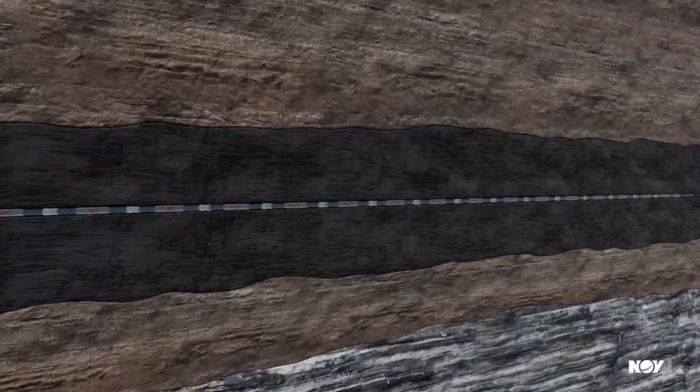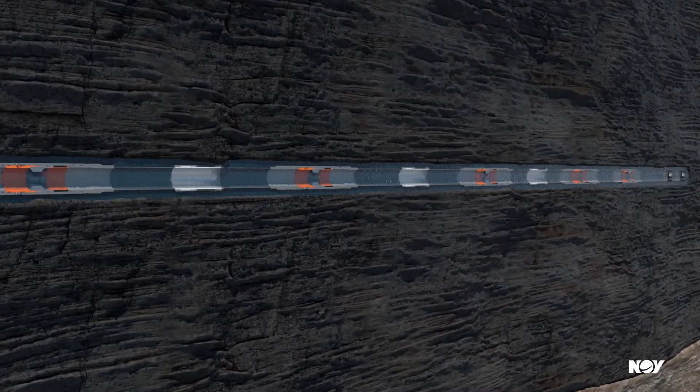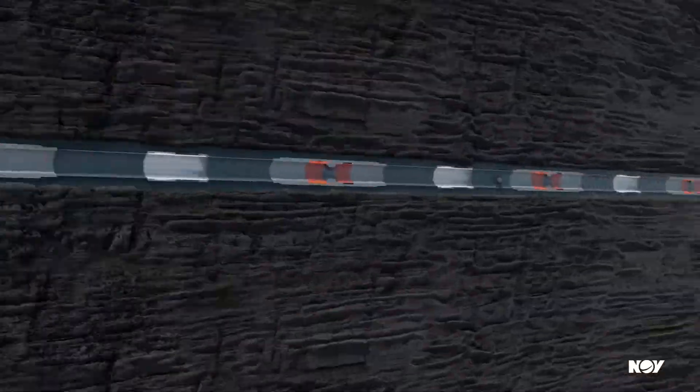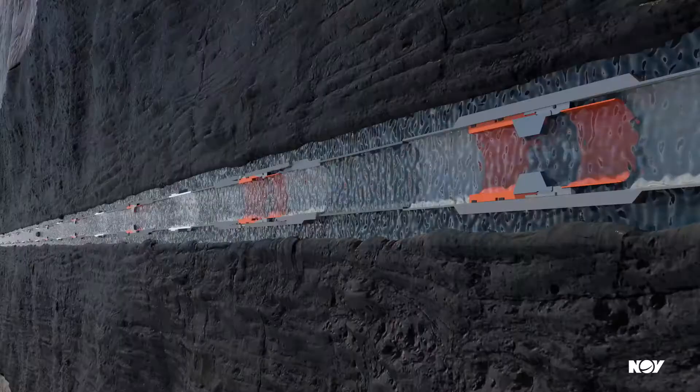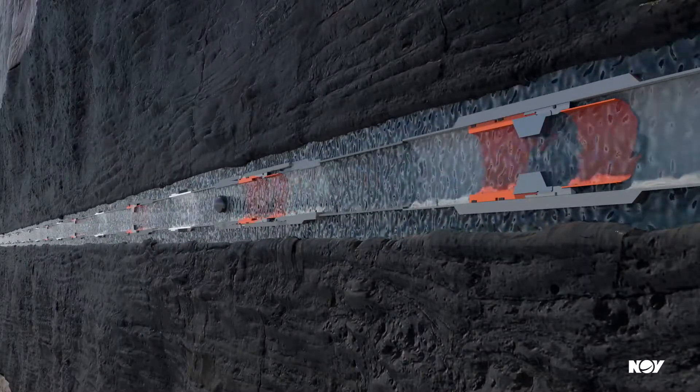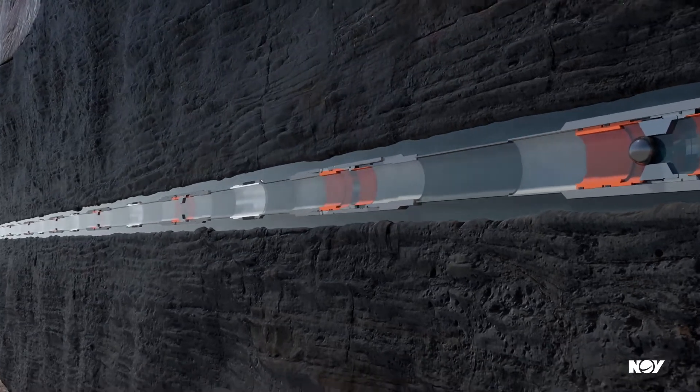At depth, circulation is established to remove any residual cuttings. A small ball is circulated down to land in the circulation sub. The sub is closed, allowing for isolation of the casing string.